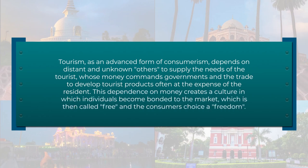Tourism as an advanced form of consumerism depends on distant and unknown others to supply the needs of tourists, whose money commands governments and the trade to develop tourist products — often at the expense of the resident. This dependence on money creates a culture in which individuals become bonded to the market, often called 'free consumer choice' in industrialized countries. Few of the basic needs are satisfied locally; household goods, shelter, transport, leisure, entertainment, and healthcare all have their location in communities which may not be able to use them. This form of free market enterprise demands an infrastructure that comes at a heavy price while also putting pressure on ecology and the environment.